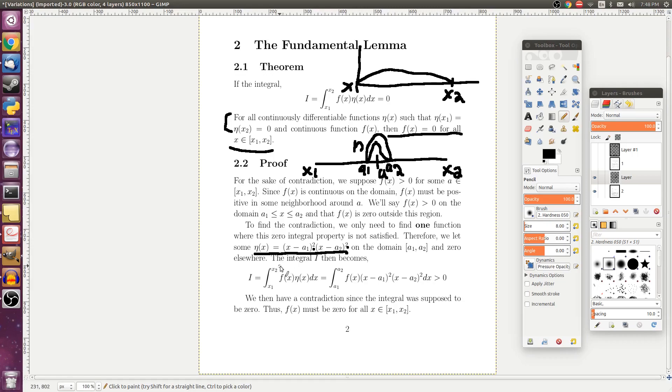So then that integral from earlier then looks like this. Since f, so this function on the inside right here was equal to zero and eta is equal to zero in these two regions right here. Then that integral just becomes the integral from a1 to a2 of f of x and then eta of x. But eta of x is positive in this region and so is f of x. So this integral has to be greater than zero.